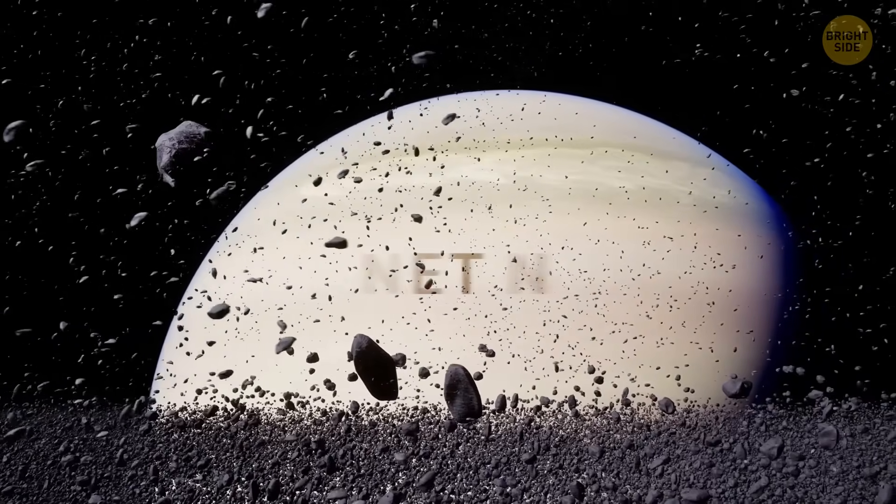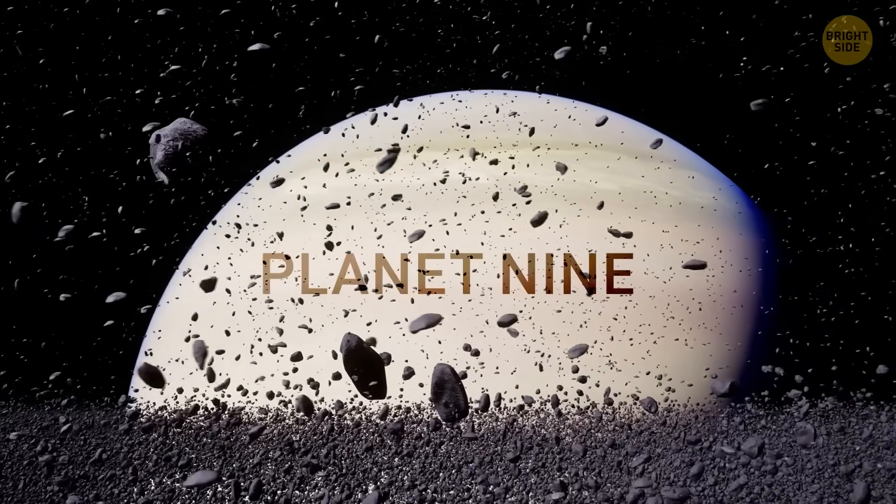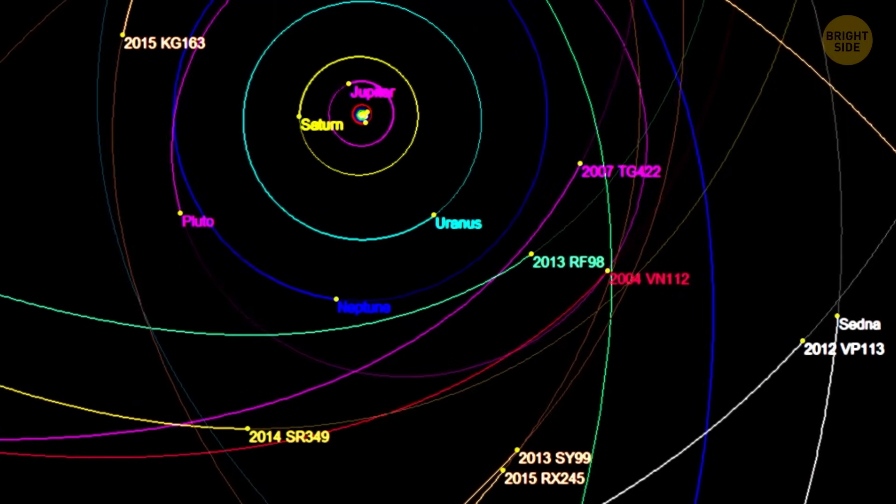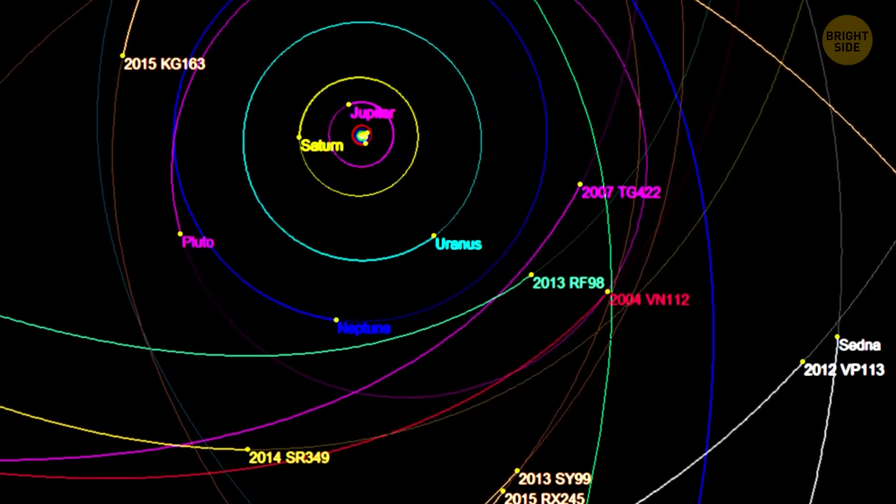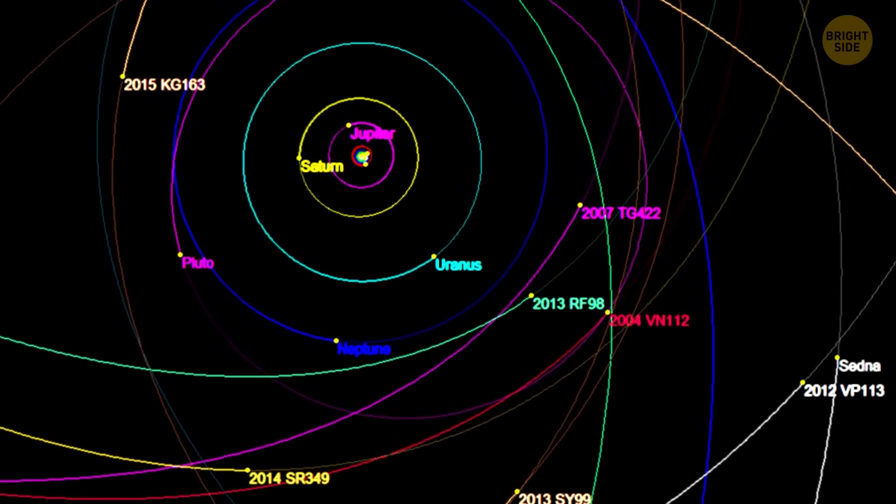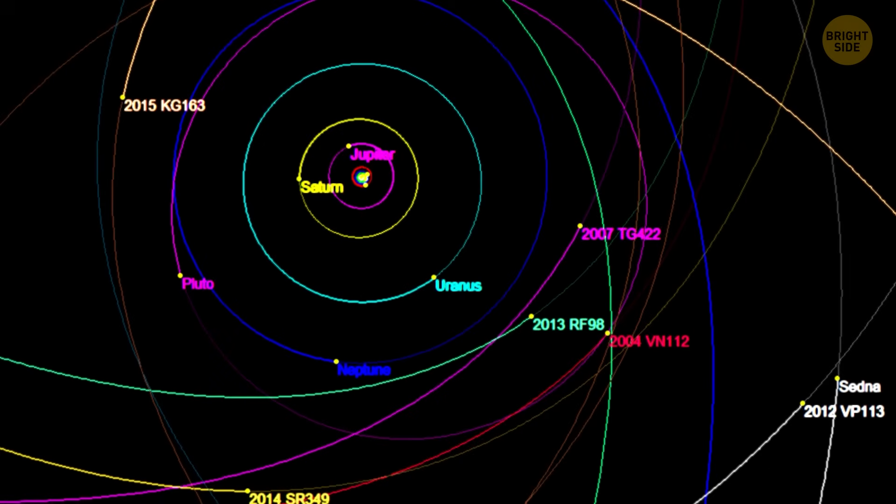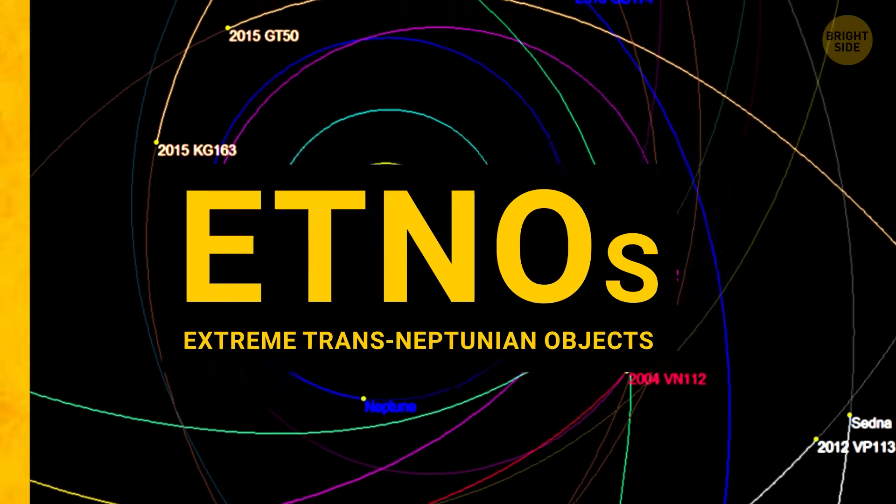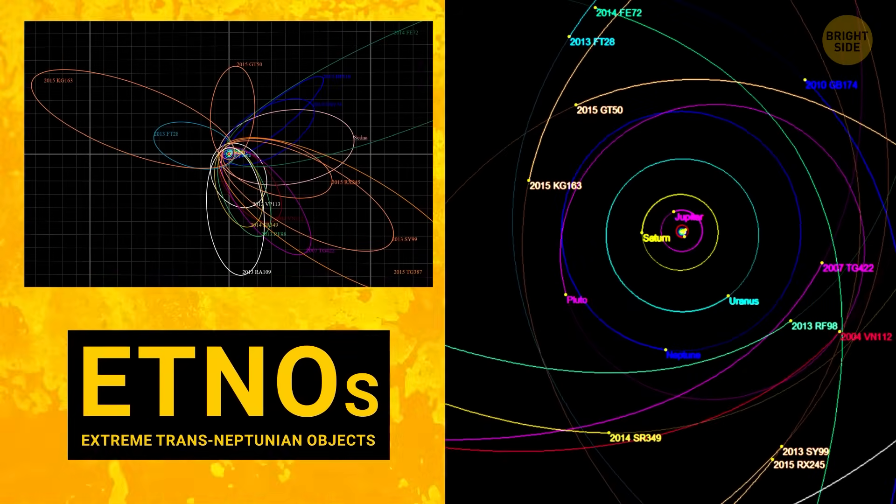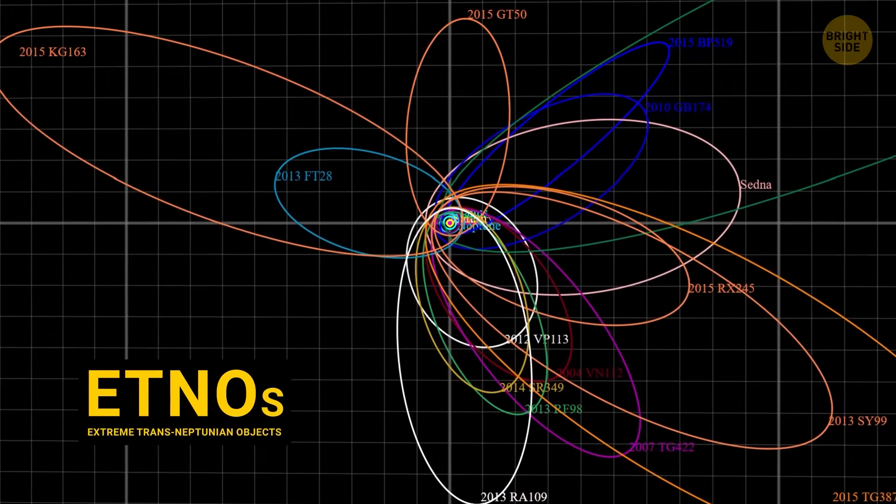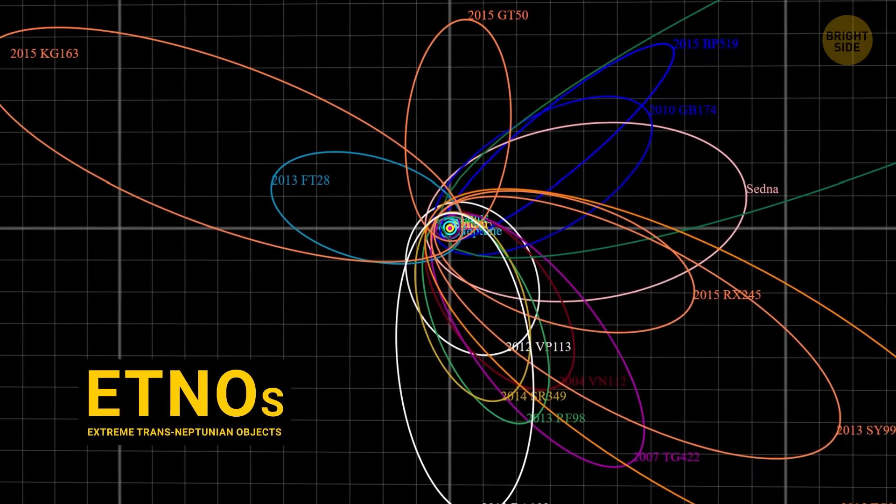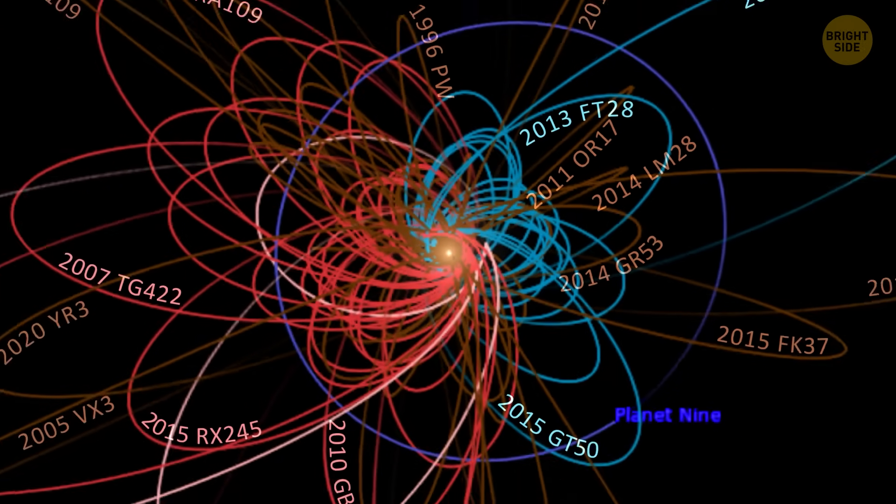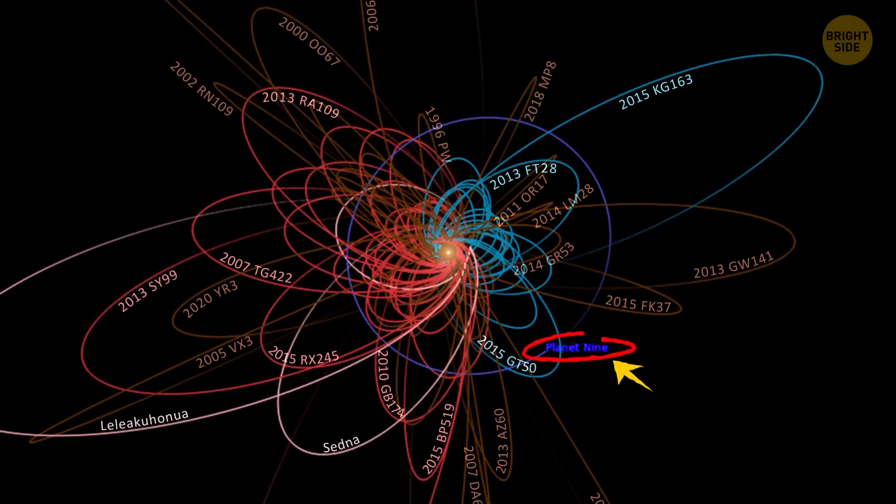This mystery planet is often called Planet 9. Now, Planet 9 hasn't been seen yet, but scientists think it might be out there because of some tiny, faraway space rocks called etnos that move following bizarre, confusing paths. These paths seem to be grouped together and tilted in a way that doesn't happen by chance. This could mean there's a hidden planet pulling them into place with its gravity.